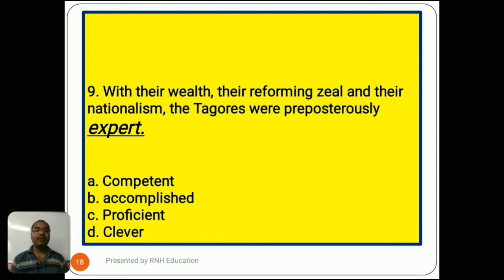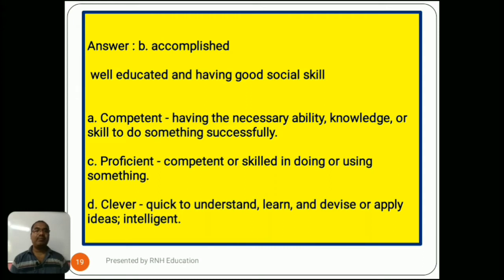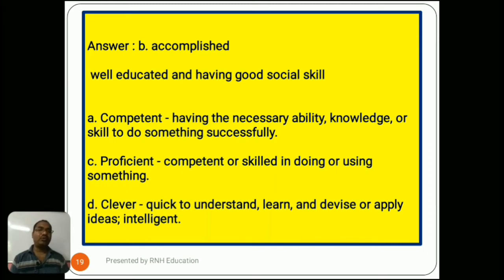Question number 9: 'With their wealth, their reforming zeal and their nationalism, the makers were preposterously expert.' The word is expert. Options are A) competent, B) accomplished, C) proficient, D) clever. The answer is B) accomplished, meaning well educated and having good social skills. Option A, competent, means having the necessary ability, knowledge, or skill. Option C, proficient, means competent or skilled in doing or using something. Option D, clever, means quick to understand and apply ideas intelligently.